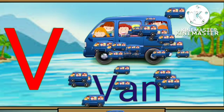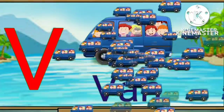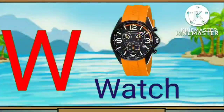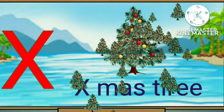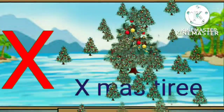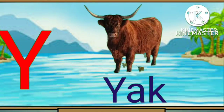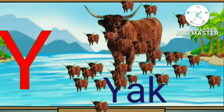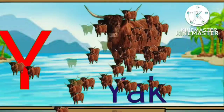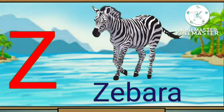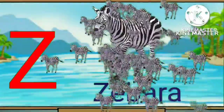V for violet. W for watch. X for X tree. Y for yak. Z for zebra.